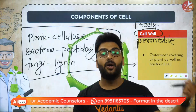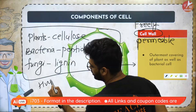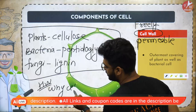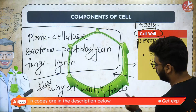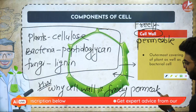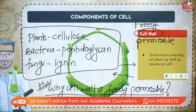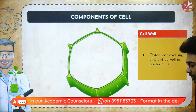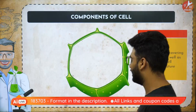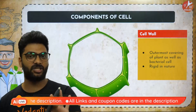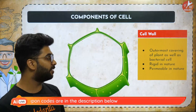Here's your homework: why is the cell wall freely permeable? Tell me the answer in the comment section below. The cell wall is the outermost covering of plant and bacterial cells and it is rigid in nature — yet even though it is rigid, it is freely permeable.